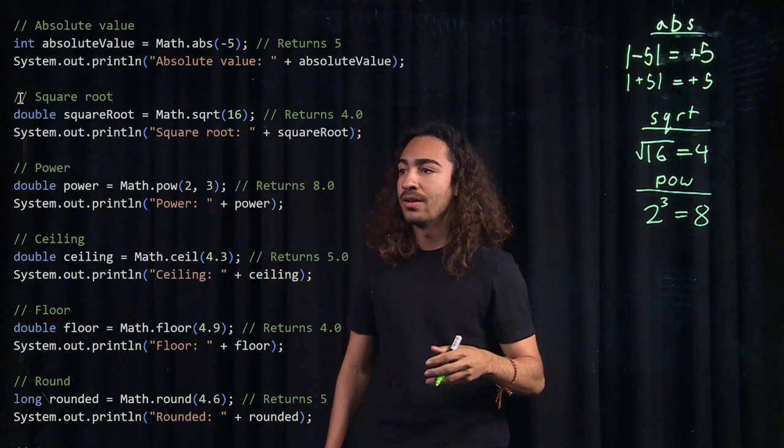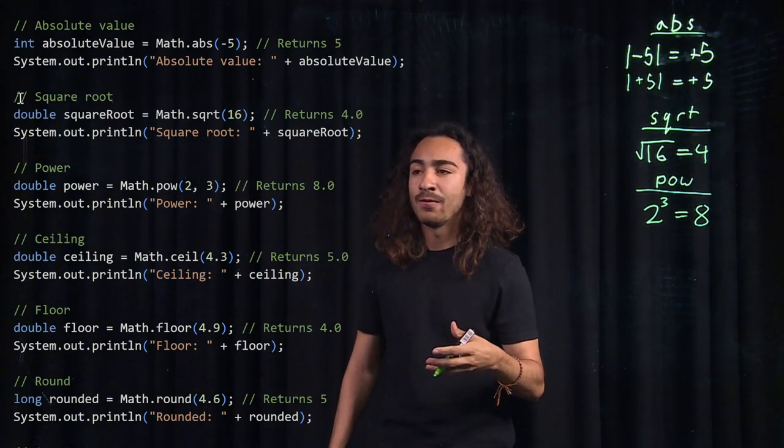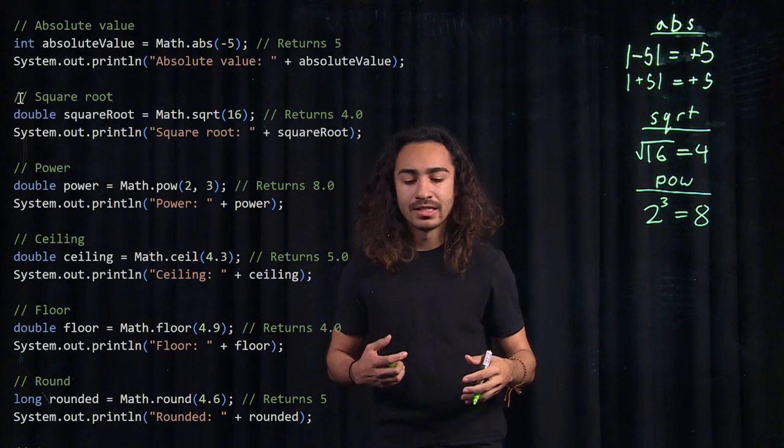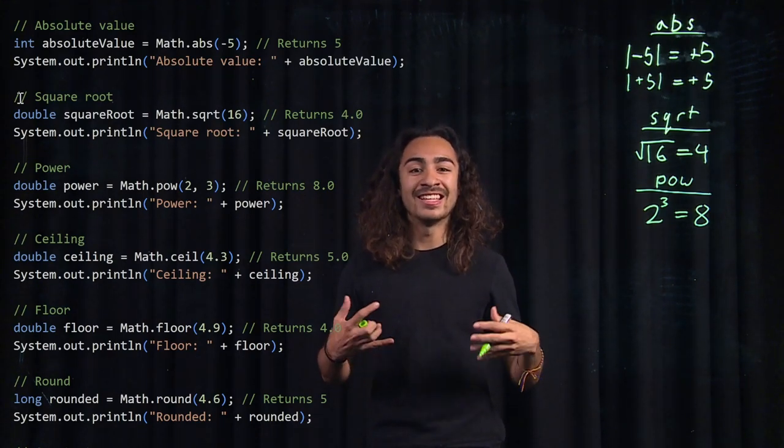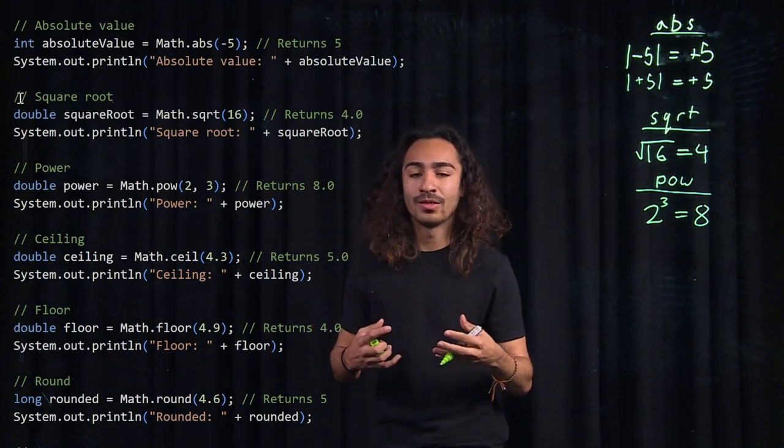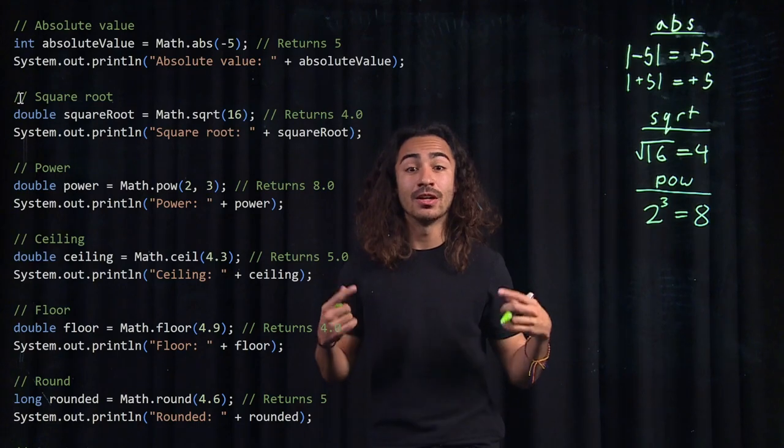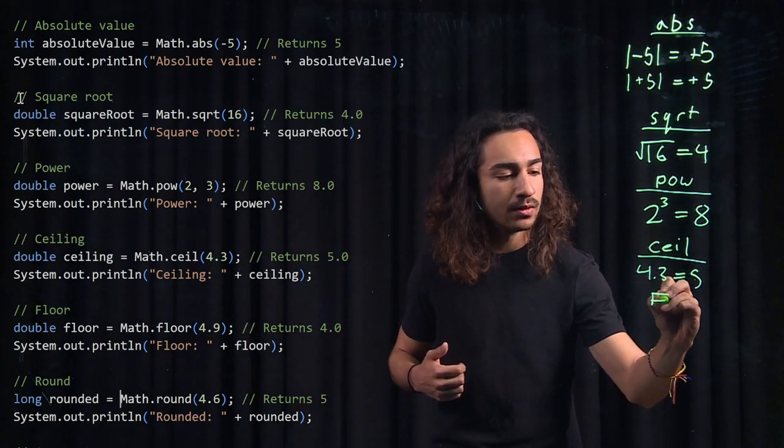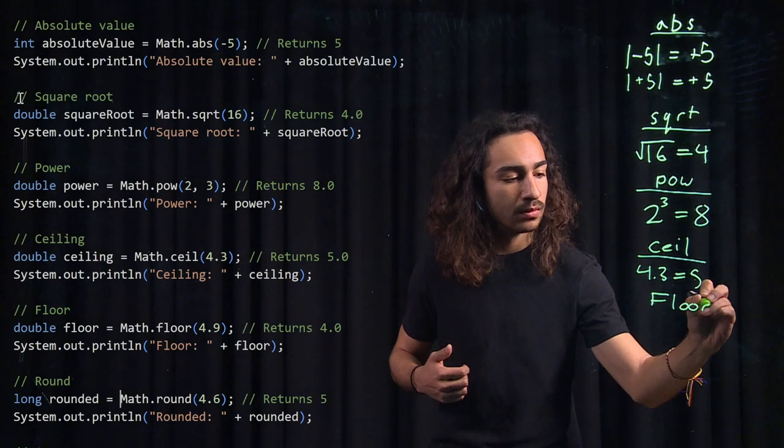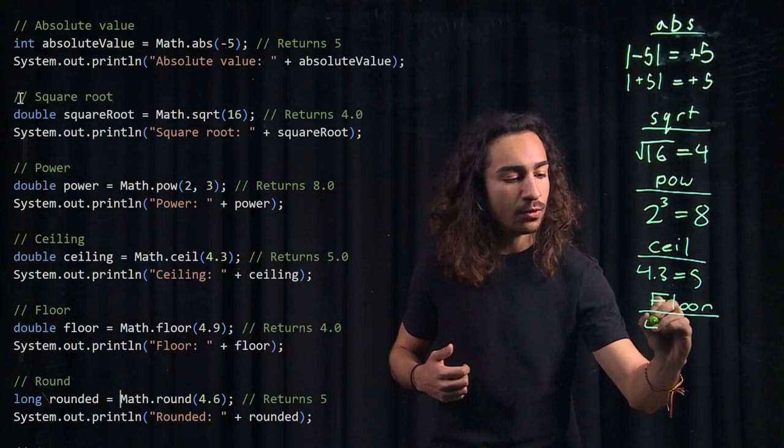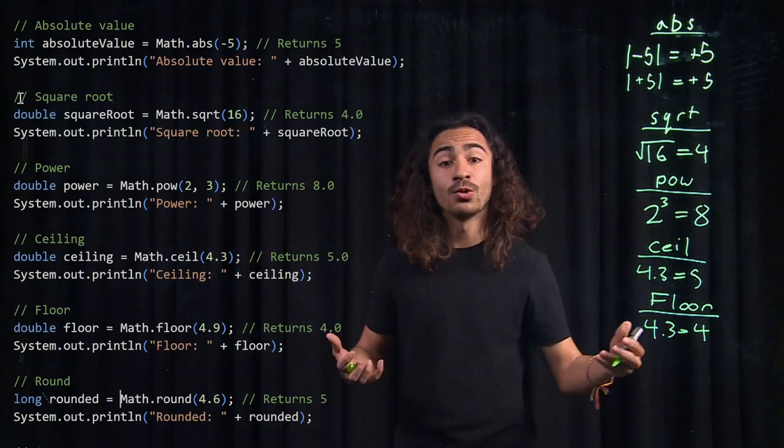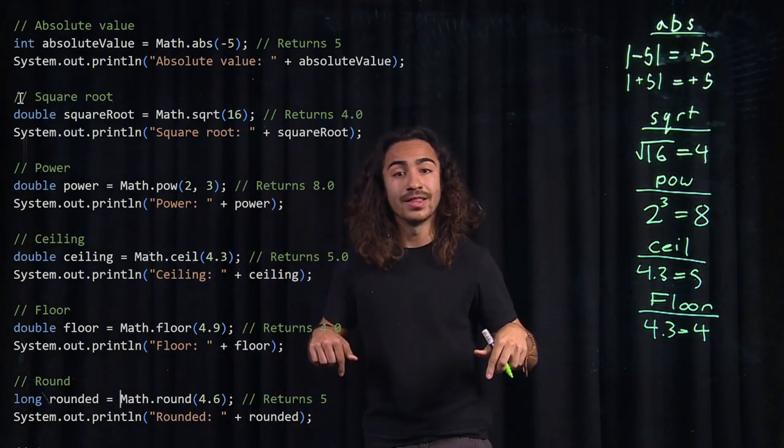And then for Math.ceiling and Math.floor, those are two similar but opposite functions. Ceiling, if you give it a decimal value, let's say 4.3, it'll give you the next integer up or the next whole number above that value. And for floor, 4.3 will be 4 because floor gives you the next value below that decimal value.